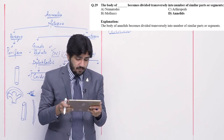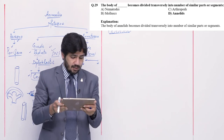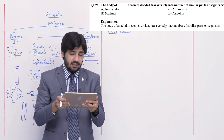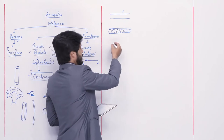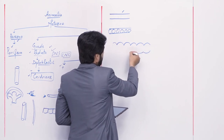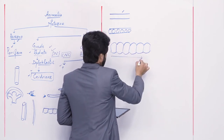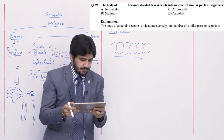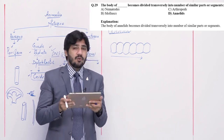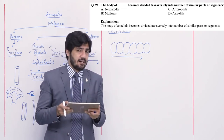Question number 29: the body of blank becomes divided transversely into a number of similar segments — alpha nematodes, beta molluscs, charlie arthropods, and delta annelids. Transverse segmentation occurs in annelids — both outer and inner segments can be observed because septa exist in the body dividing it transversely. Right answer is delta — annelids. Nematode bodies are not segmented. Molluscs and arthropods have segmentation in different parts, but not transverse segmentation.